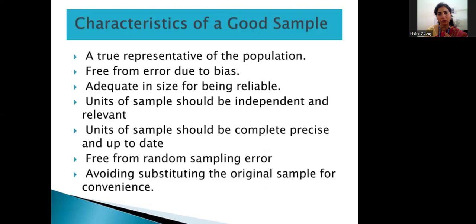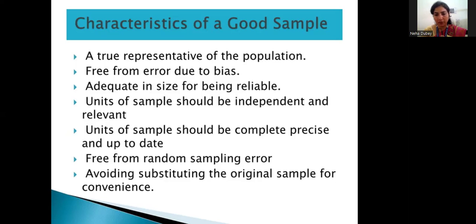What are the characteristics of a good sample? It should be a true representative of the population, free from error due to bias, and adequate in size for reliability. In certain cases, though the population is large relative to the research topic, the selected sample size may be too small and not adequate for drawing universal conclusions — so you must follow the appropriate formula for determining sample size based on population. Units of the sample should be independent, complete, precise, up to date, free from random sampling error, and should avoid substituting the original sample for convenience.